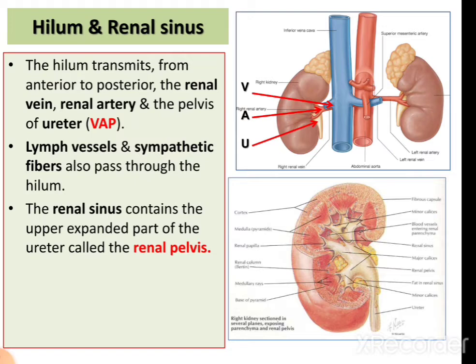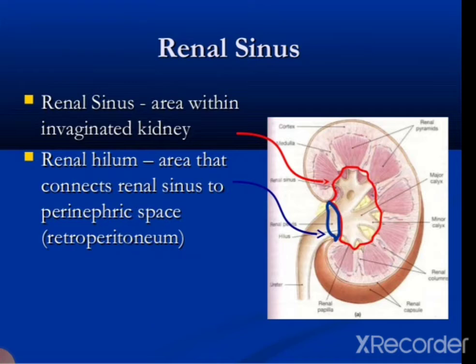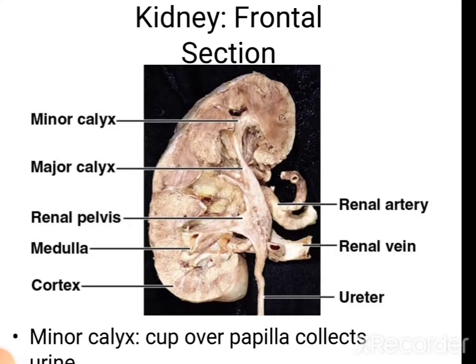The renal sinus contains the upper expanded part of the renal pelvis. The perinephric fat is continuous into the hilum and the sinus and surrounds all these structures. The renal hilum is the area that connects the sinus to the perinephric space. In the frontal section of the kidney we can see the interior, including the major and minor calyces, the renal pelvis lying in the renal sinus, the pelvis of the ureter, and then the ureter.